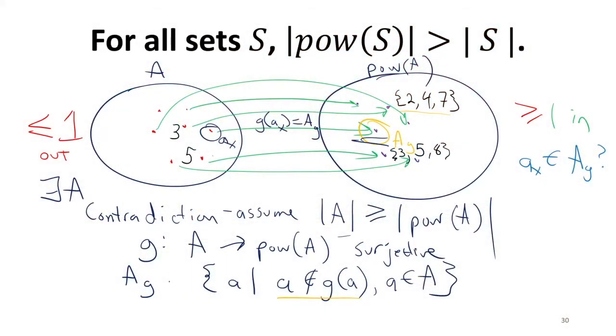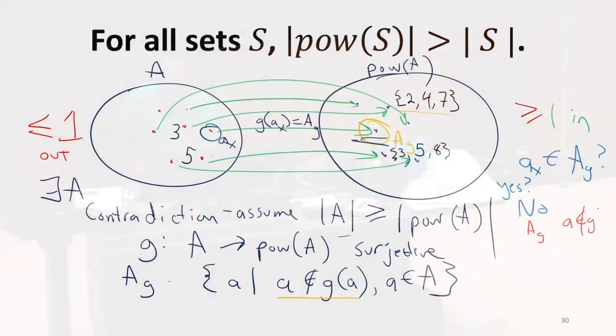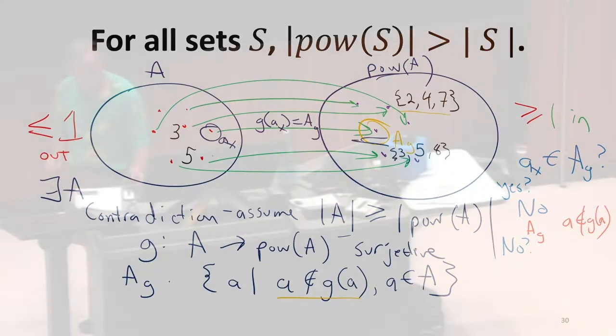Set membership is a binary question. It's either yes or no. There's only two possible answers. Could the answer be yes? Okay. It can't be yes, because that would contradict our definition of AG. Because our definition of AG is ones that don't map to themselves. So it can't be yes. It better be no.